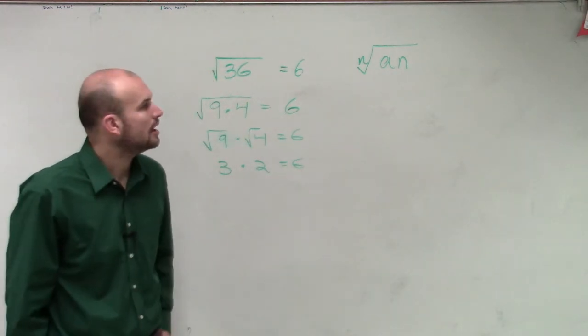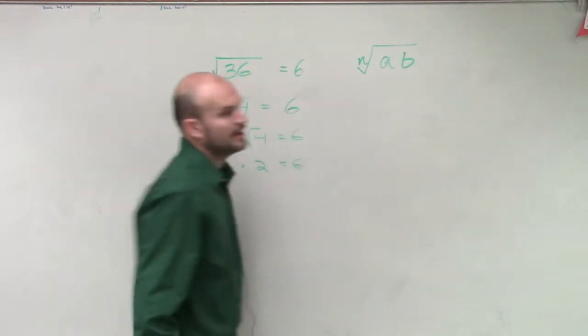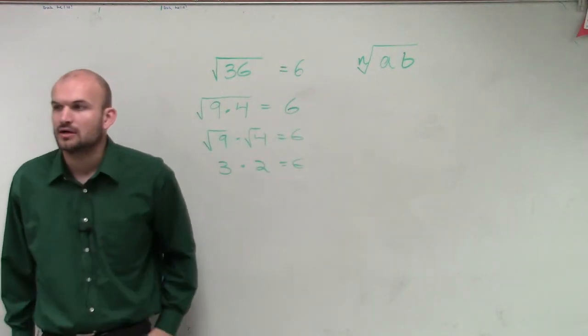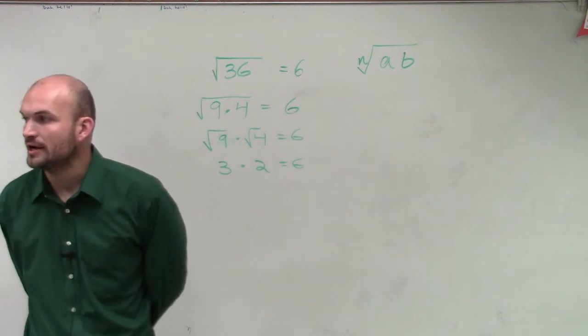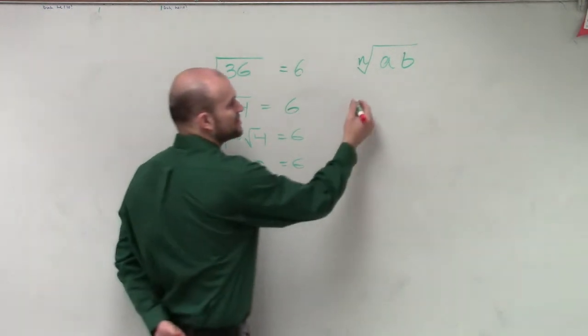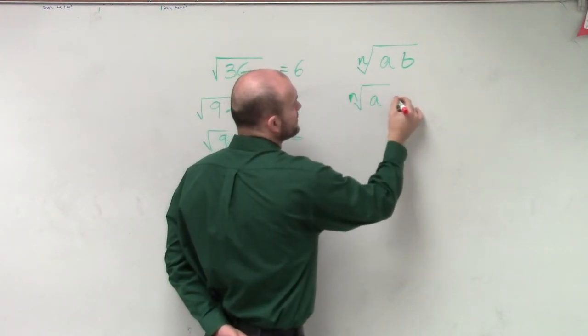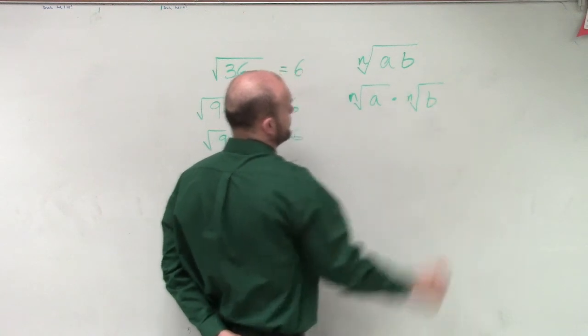If I take the root of the product of 2 or more terms, then I can break that up into the nth root of a times the nth root of b.